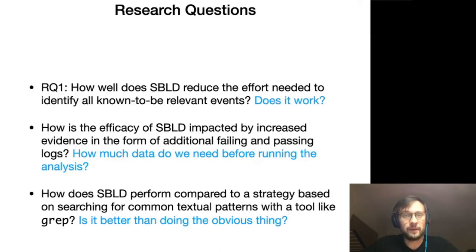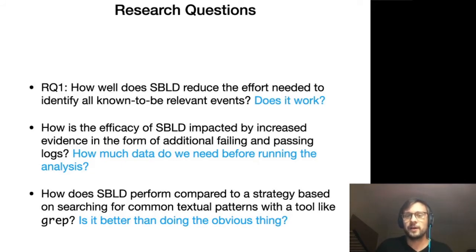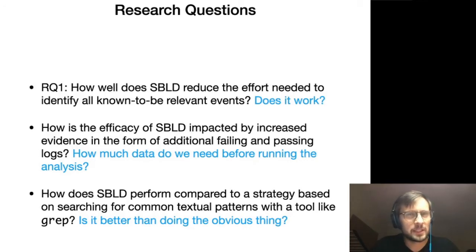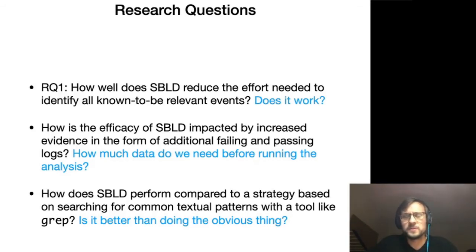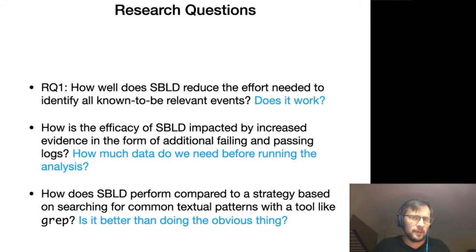To evaluate our tool we asked the following three questions. First, does it work? Does it reduce the effort needed to identify all the known-to-be relevant events? Then, how much data do we need before we can run our analysis — is there a diminishing returns effect? And then, how does our technique fare compared to a much more direct approach using something like grep, searching for strings like 'error', 'fault', and 'fail'?